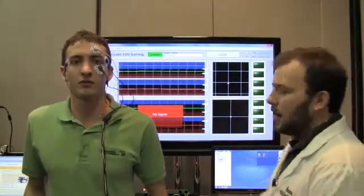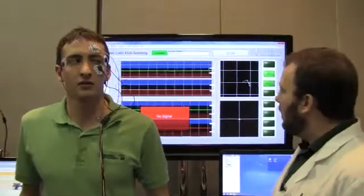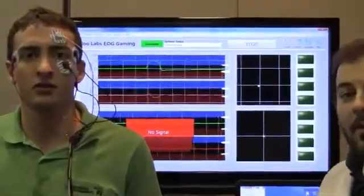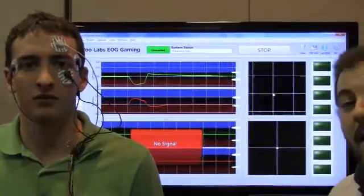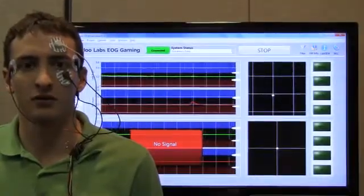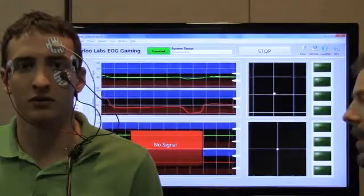If you look at the green line on our graph, that shows the left-right movement of the eyes. So if I get Chris to look left, we can see he has a spike up, and if he looks right, we can see a spike down. Likewise, the red line tracks the up and down movement, so if he looks up, we see that spike up again, and if he looks down, you can see the spike down.